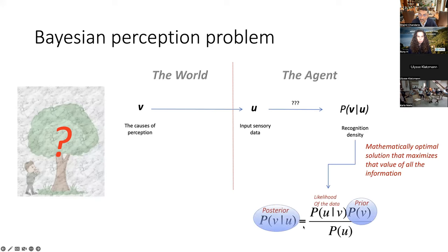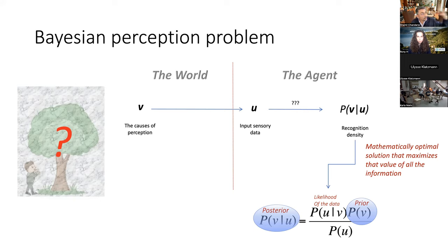This is solved by using Bayes' theorem. The term we're trying to solve for is the posterior - the probability of the causes of my sensations given my sensory data. To solve that, we use two terms plus a normalizing term. We start with our prior probability: before receiving any data, what are our background prior beliefs around the causes of features in the world - that there are trees, that there are agents? The second term is the likelihood of the data: what is the probability of getting this particular sensory data given that there's a tree? Underneath is the probability of receiving this sensory data in the first place - a normalizing term.